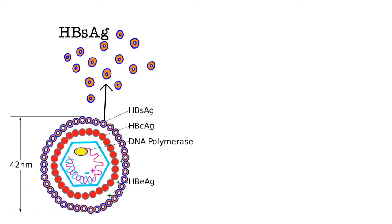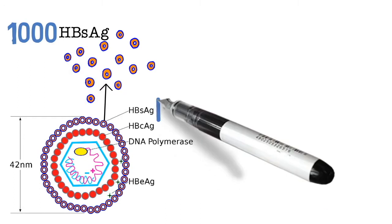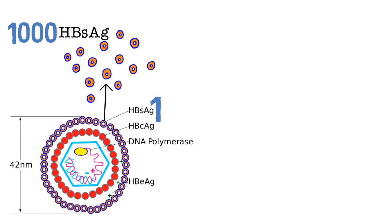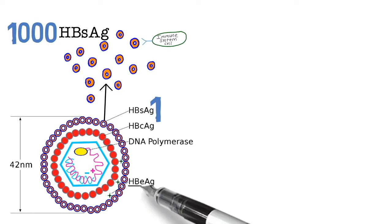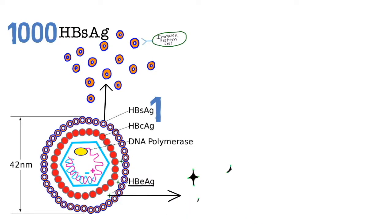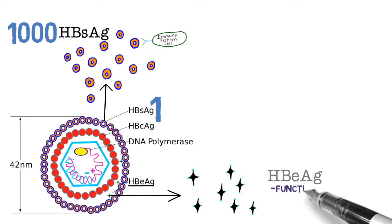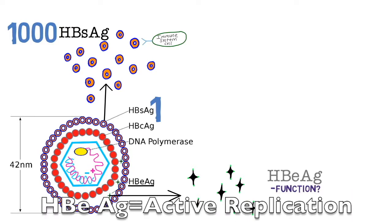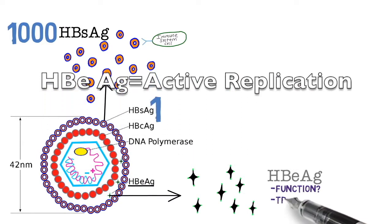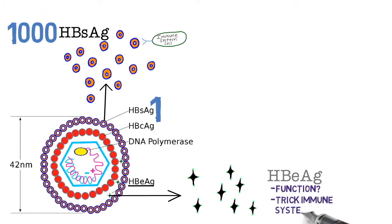The virus is actually secreting hepatitis B surface antigen into the bloodstream in high amounts — roughly 1000 to 1 compared to the surface antigen on the envelope. This is beneficial because our immune system can target hepatitis B surface antigen. Hepatitis B E antigen is also being produced by the virus, and it is a marker for an actively replicating virus.